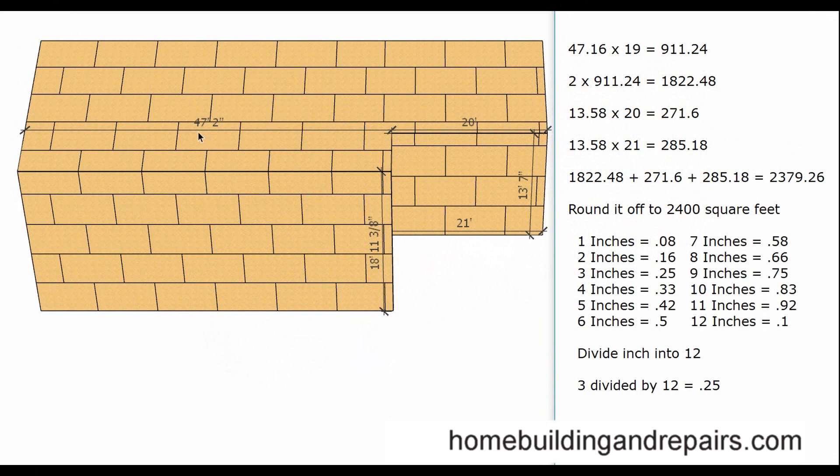Next up on the list will be to convert the measurements to decimals: 47 feet, 2 inches, 47.16. The 0.16 represents the 2 inch measurement. And I put together a little chart here that you can use. 2 inches equals 0.16 and that would give us 47.16 times 19. Remember we rounded this number off to 19 feet.